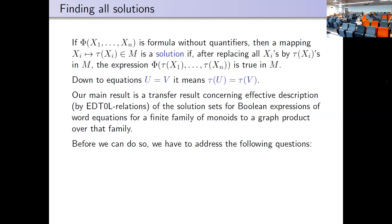If you have a formula without quantifiers, you map variables to elements of the monoid, and a solution is an assignment making the formula correct. For a word equation, you think of the solution as a homomorphism τ leaving constants invariant, and the condition is τ(u) = τ(v). Our main result is a transfer result: if you have a graph product built from monoids, and each monoid has a good property, then the graph product should also have that property.